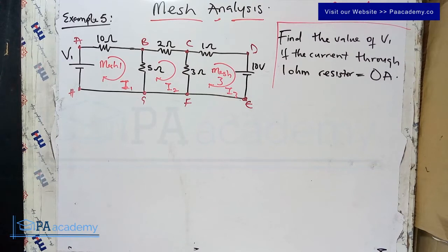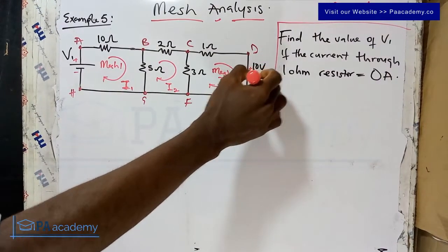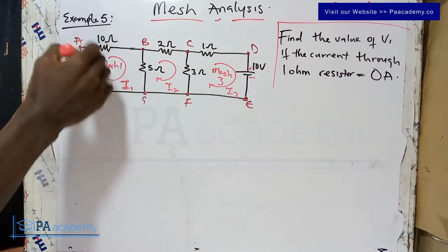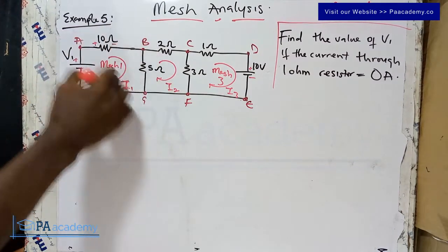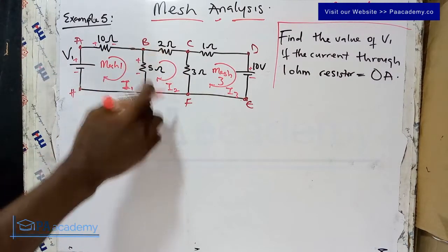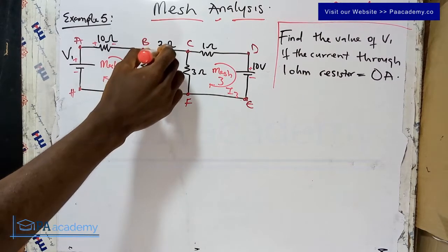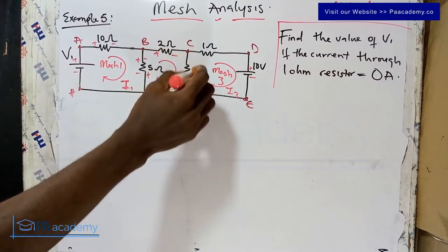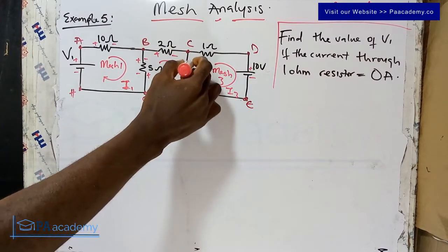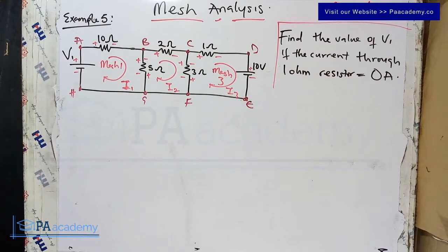Next, we assign polarities. For voltage sources, the longer side is positive and the shorter side is negative. Now let's add polarities to the resistors. For mesh one, the 10-ohm resistor is plus-minus in the direction of current, and similarly for the 5-ohm resistor. For mesh two, the 5-ohm, 2-ohm, and 3-ohm resistors are assigned plus-minus accordingly. For mesh three, we do the same.